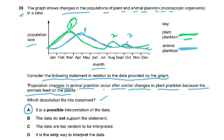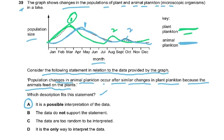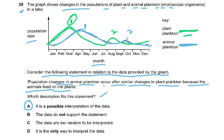The data is not random — it was collected over a year. However, it is not the only possible interpretation, since we only have two data points of correlation and would need more studies to confirm. So 'possible interpretation' (A) is the best answer, rather than 'only way to interpret the data'.